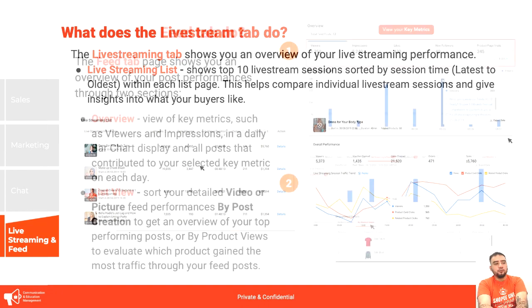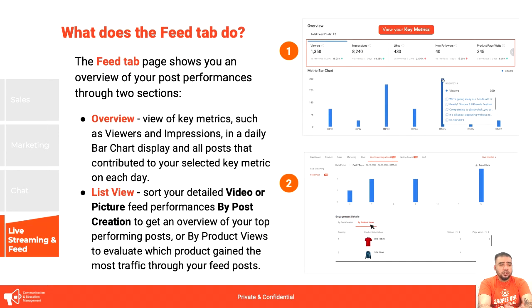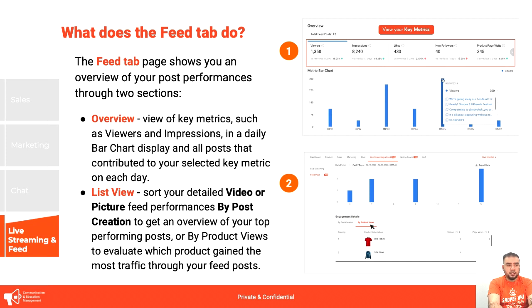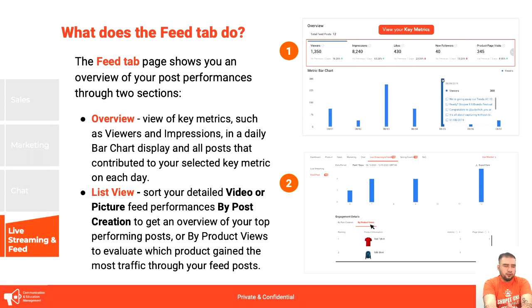The feed tab shows an overview of your post performances through two sections: an overview of key metrics such as viewers and impressions in a daily bar chart display, and a list of all posts that contributed to your selected key metric each day. The list view sorts your detailed video or picture feed performance by post creation.